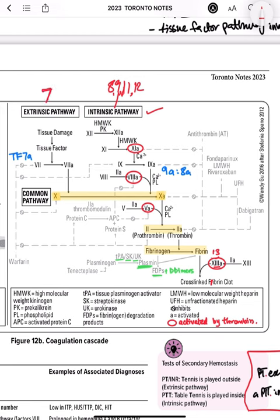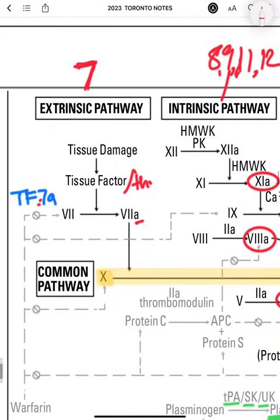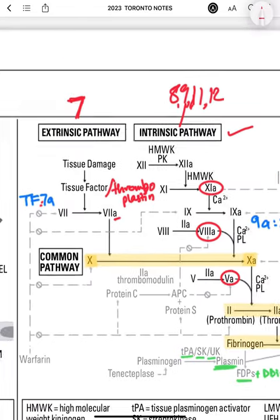The extrinsic pathway involves clotting factor 7 with tissue factor. Whenever there is tissue damage, there is production of tissue factor. When tissue factor combines with factor 7 — also called 7A in its activated form — this is the extrinsic pathway. They activate factor 10 to 10A, which is the common pathway. The tissue factor is also called thromboplastin.